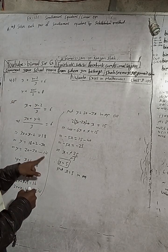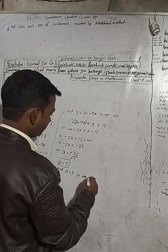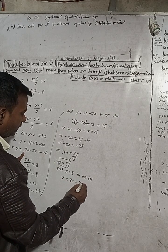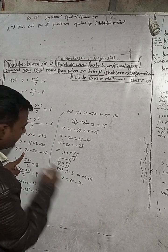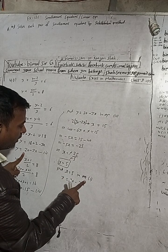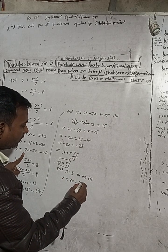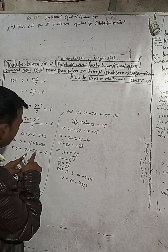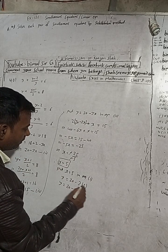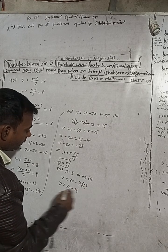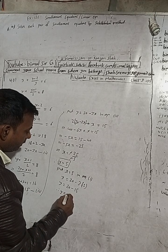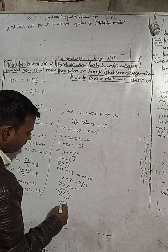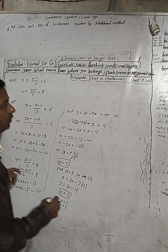Now put x equals 5 into equation 1, which is easier: y equals 20 minus 3x. In place of x put 5, so y equals 20 minus 3 times 5, which is 20 minus 15, giving y equals 5. Therefore we got x equals 5 and y equals 5.